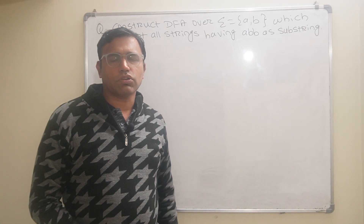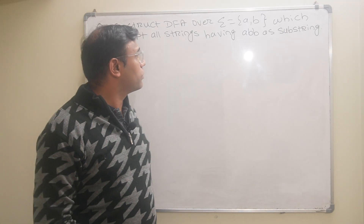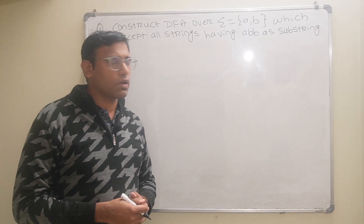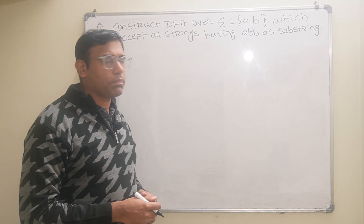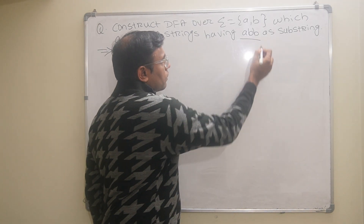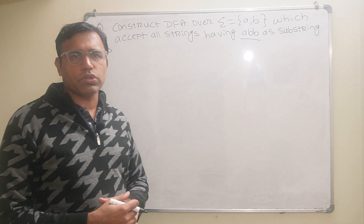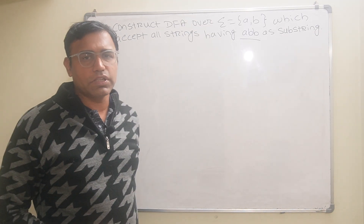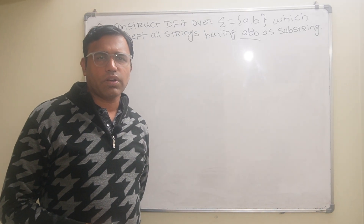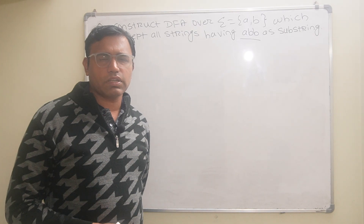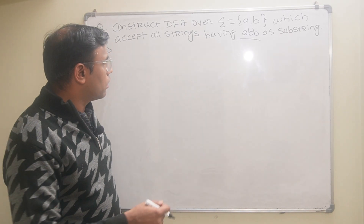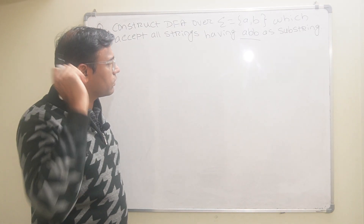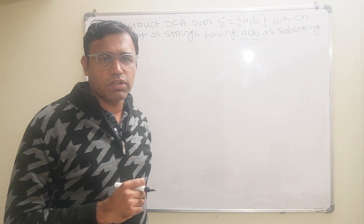Hello friends, the topic of this video is construction of a DFA over input symbol {a, b} which accepts ABB as a substring. In this question we have to construct the DFA which will accept ABB as a substring. A substring is a part of a string. Before directly constructing the DFA, I will write the possible strings which will contain ABB as a substring.